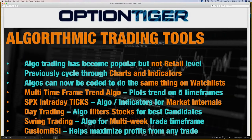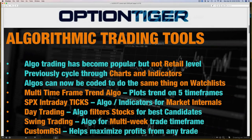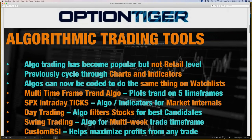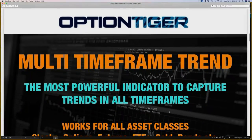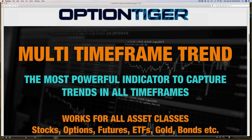At Option Tiger we've created five different algos. One is the Multi-Time Frame Trend, which also functions as an indicator plotting the trend on five different time frames. We also have the SPX, which is a very deep market internal indicator. Then there is a simple day trading algo, a simple swing trading algo — both taking into consideration price and momentum — and then we have the custom RSI. We'll be showing all of these on the platform.